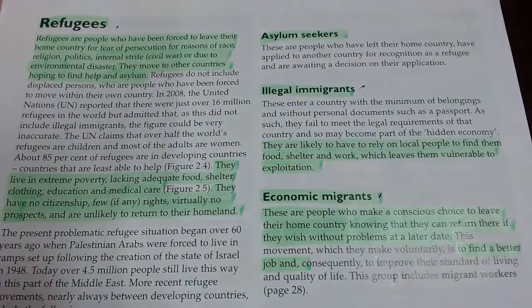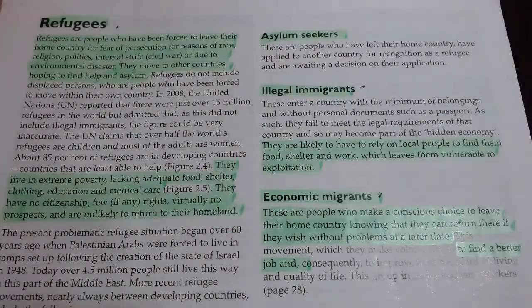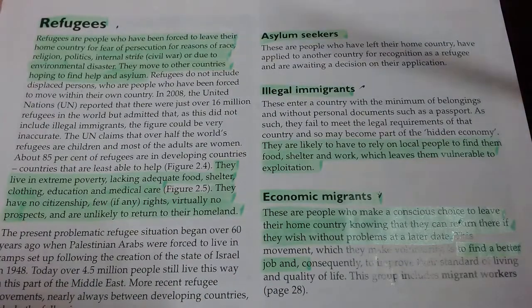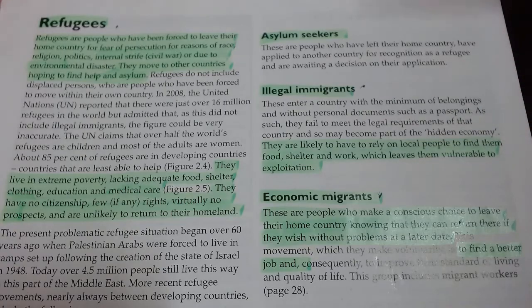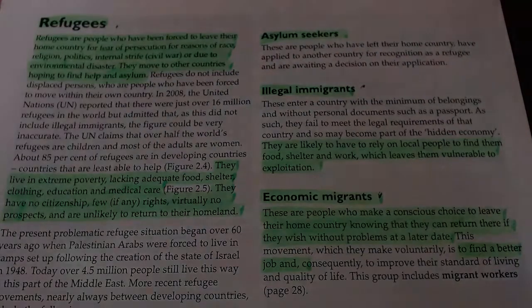On page 23, it goes through the different types of migrants. A migrant is simply somebody who moves — either emigrates or immigrates.